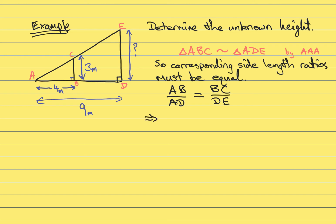Corresponding side length ratios are equal. In this particular case, we can start to write some numbers in. AB is 4 metres. AD is 9 metres. BC, we know, is 3 metres. And DE is the value that we don't know. So I'm going to pop the question mark in there.